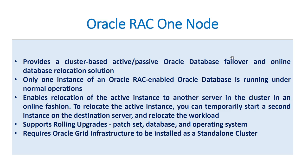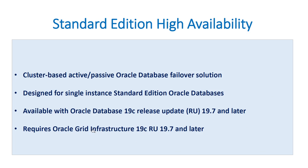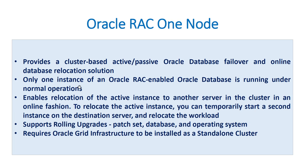Oracle RAC One Node is also active-passive, similar to RAC. However, the advantage is that before failing over your database to another node, you will first start the database on the second node and then relocate, which minimizes downtime. This option supports rolling upgrades such as patch-set, database, and operating system upgrades. It needs Oracle Grid Infrastructure enabled.